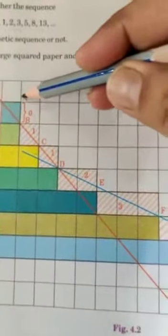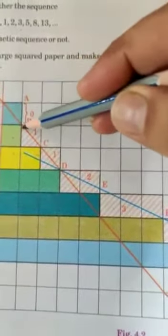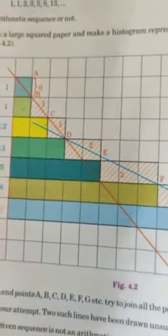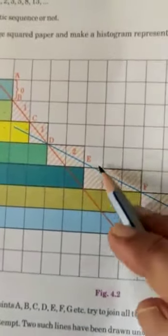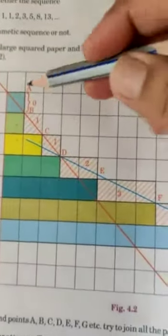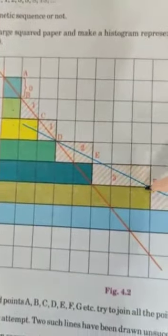Now here, when we join these tops, we will not get one straight line. We get different straight lines. This shows that this is not an arithmetic progression.